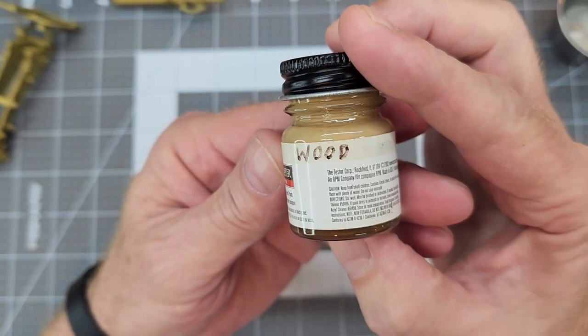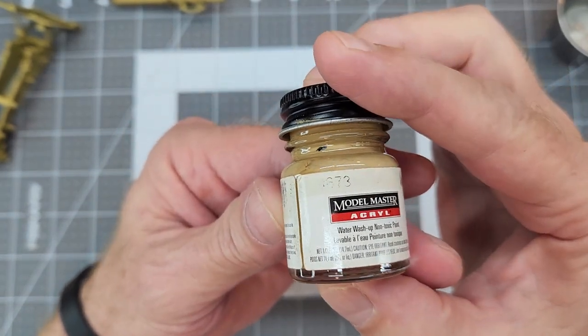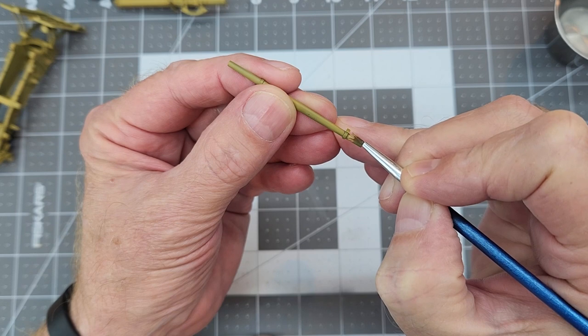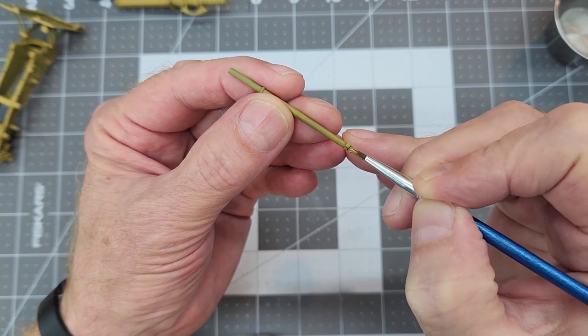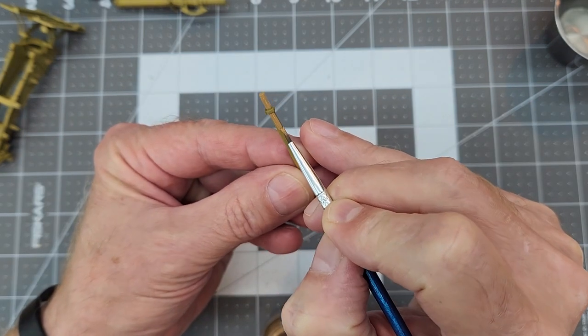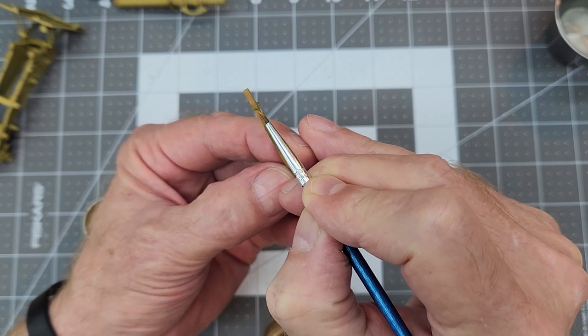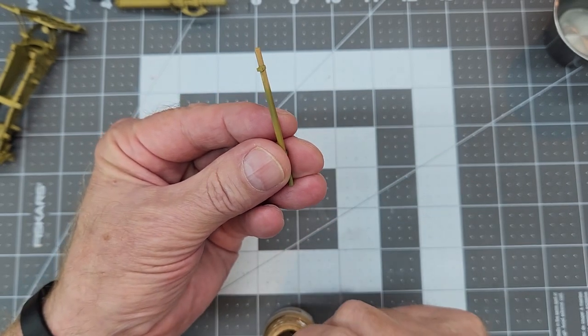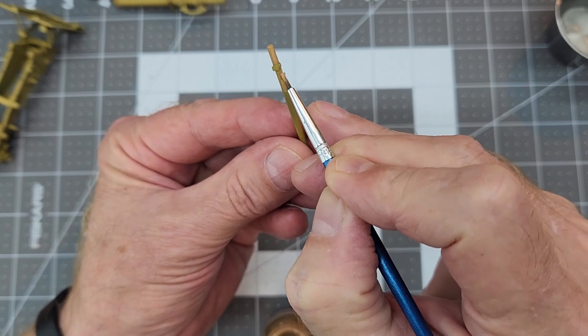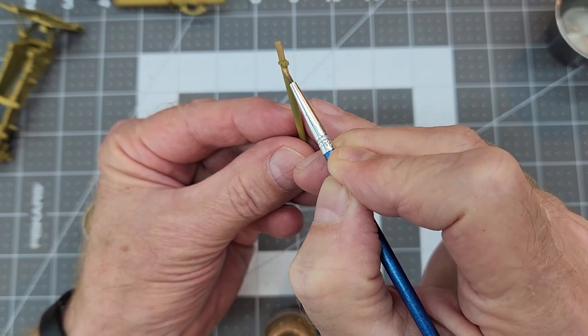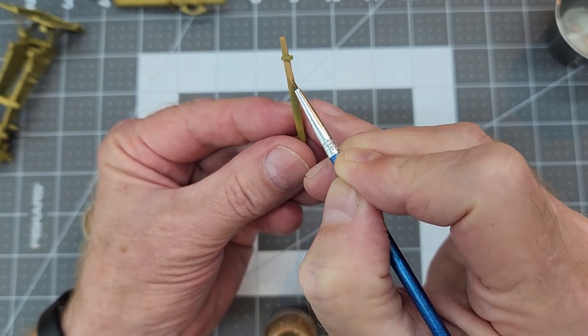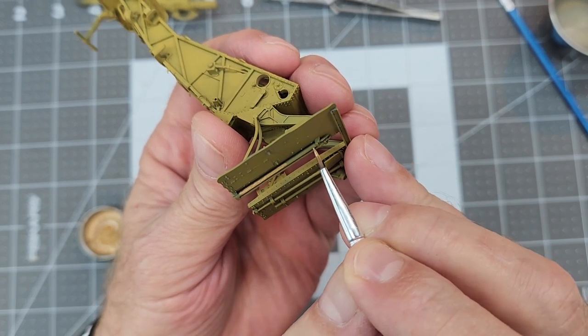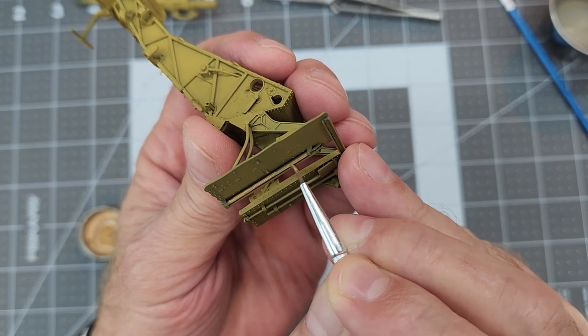Next up, we're going to use this Model Masters acrylic wood. I've got wood written on my bottle because it's rubbed off, it's so old. We're just going to go right up to our clamps that secure it to the trails of the gun, and we're going to coat all the wooden handles for our tools. This is the handle that the crew uses to do major adjustments for traverse for the gun. Here you can see we're going to do these handles as well. It's not much of a color difference, but in the end, it might make a big difference.